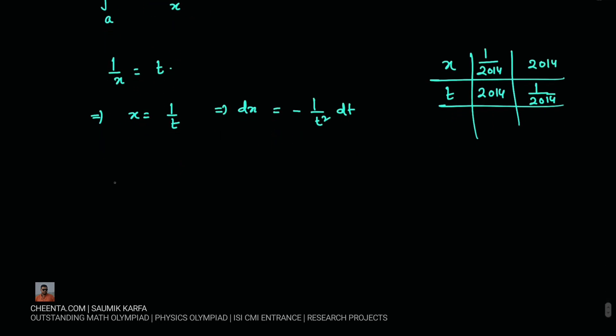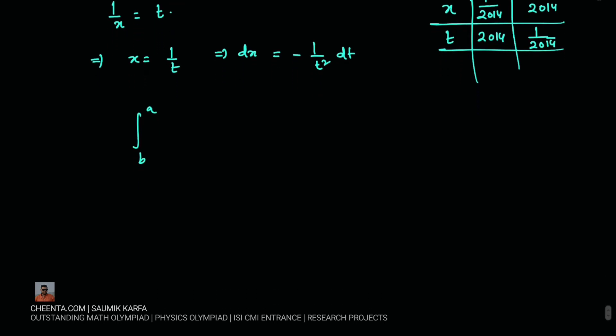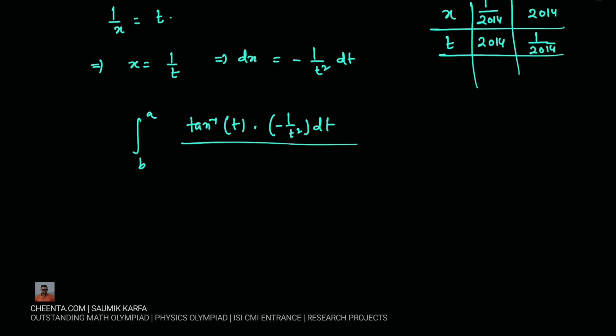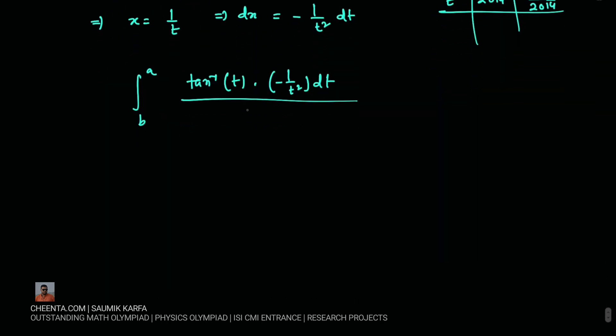So the integration will now be from b to a and then we will make the substitutions here. So we will get tan inverse of t times minus 1 by t square dt because of dx and then we had x there so that would be 1 by t.